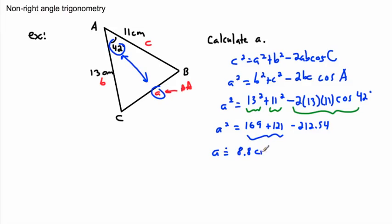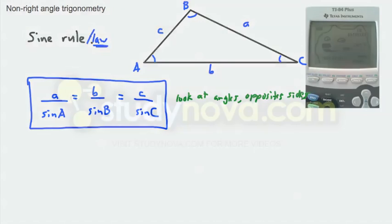The trick is to go slow and deal with the expression as three separate terms — the b squared term, the c squared term, and the minus 2bc cosine A term. Remember, a term is separated by a plus or minus. That's how you can deal with these complicated-looking triangles using either the sine law or the cosine law.